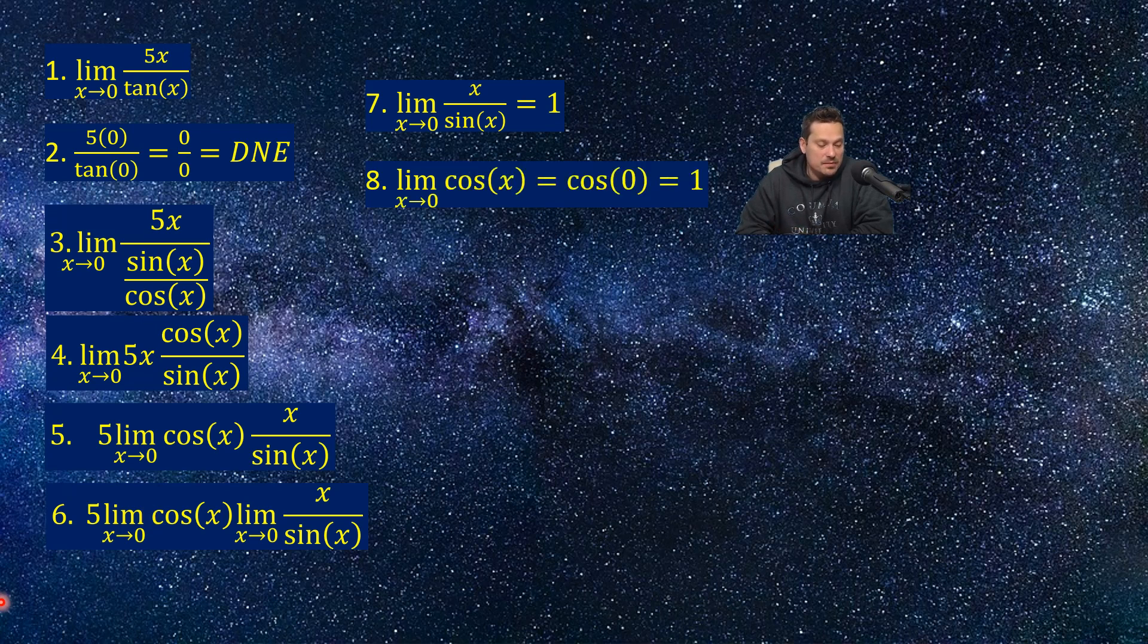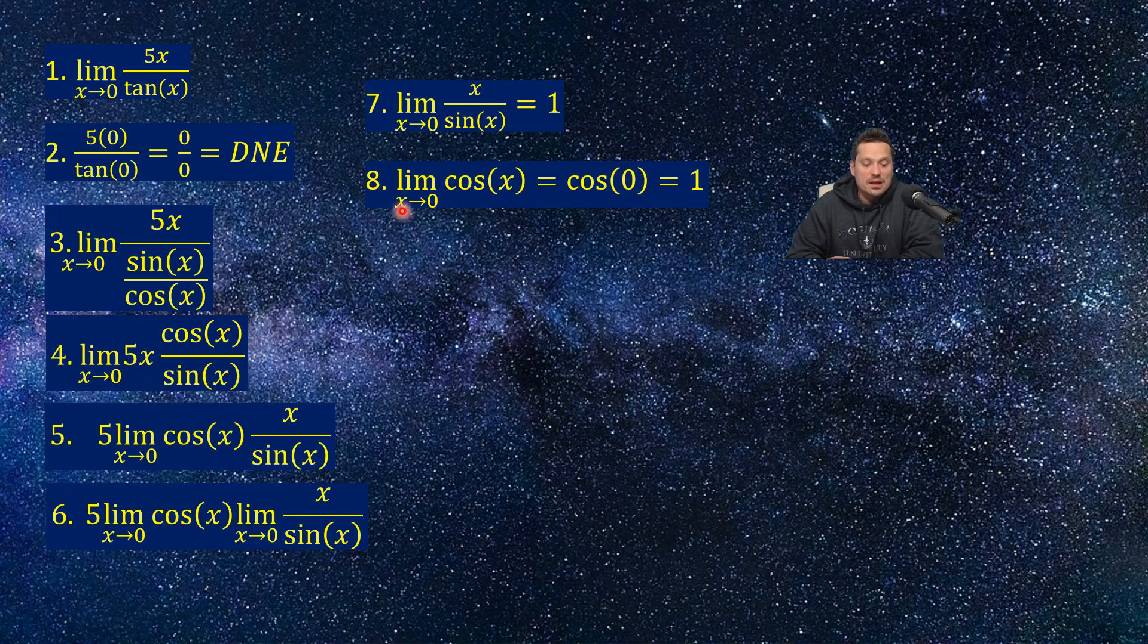Another thing that we have to observe is that back at step 6, I had the limit as x approaches 0 of cosine x. Well, that limit can be now found directly. So what I mean is I end up with limit as x approaches 0 of cosine x. I can replace x with 0 directly. That's going to give me cosine of 0, which is 1.